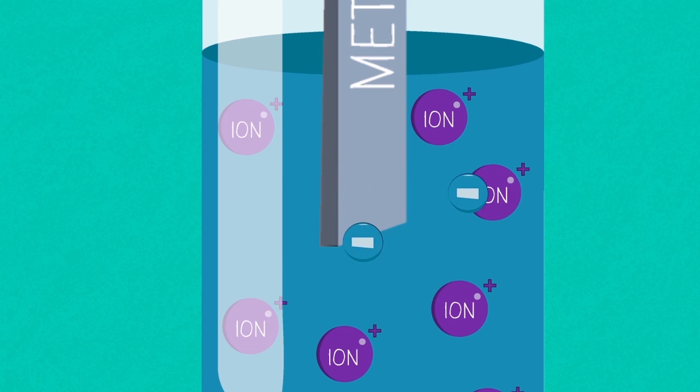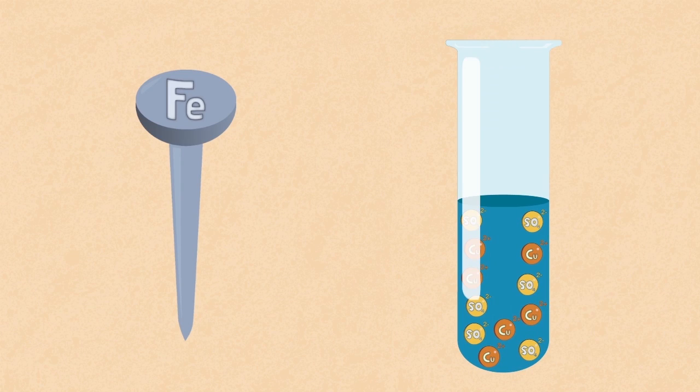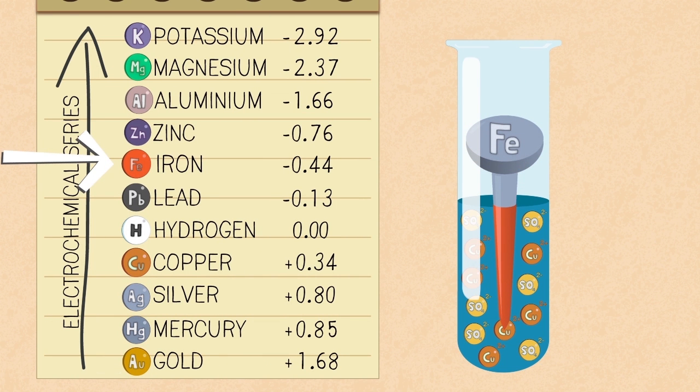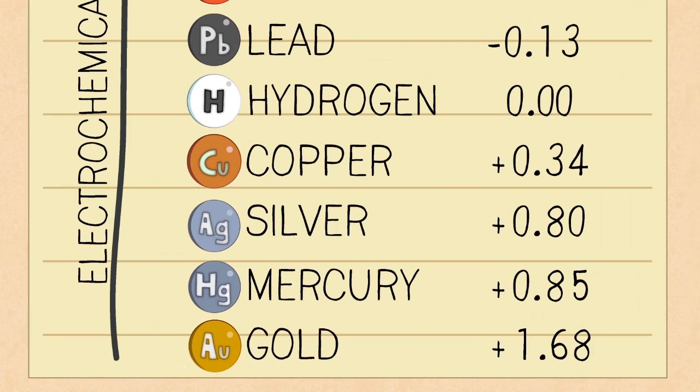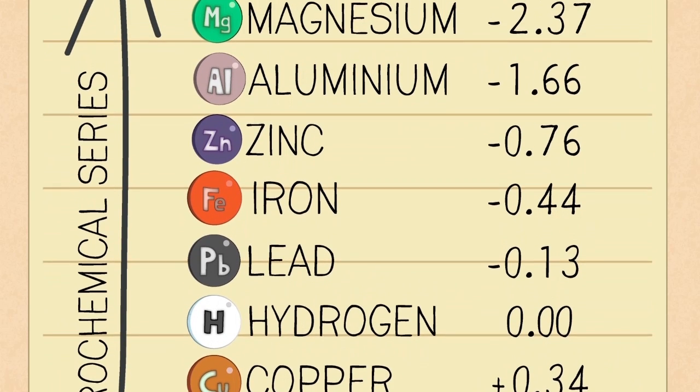Let's consider what happens when an iron nail is placed in a solution of copper sulfate. The higher up metal in the electrochemical series is the one that always displaces the ions of the lower down metal. Metals lower down in the series cannot displace more reactive metals from their solution.